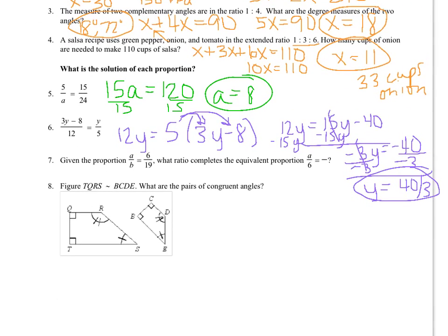For number 7, they give me a proportion, and they want me to write an equivalent proportion. I've got A over B and 6 over 19, but I've changed it. I've got A over 6. So I have to see what pattern happened. I went from left to right. So B over 19 would be my missing part of my proportion.